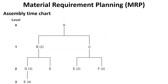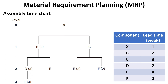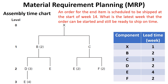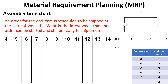Let us now construct the assembly time chart for the end product with the shown product structure tree. The lead time of items and subassemblies are illustrated in this table. If an order for the end item is scheduled to be shipped at the start of week 14, what is the latest week that the order can be started and still be ready to ship on time? Construct a table with columns headed by the week number.